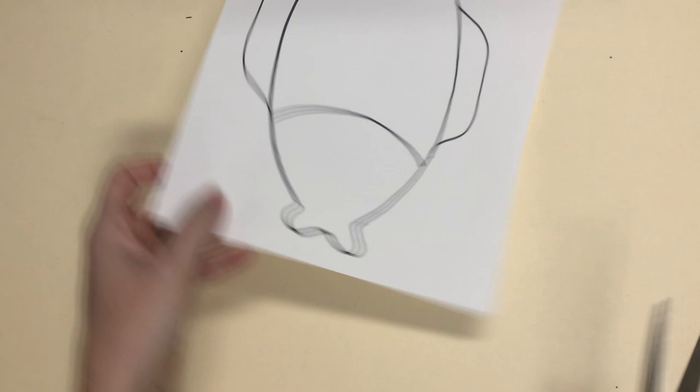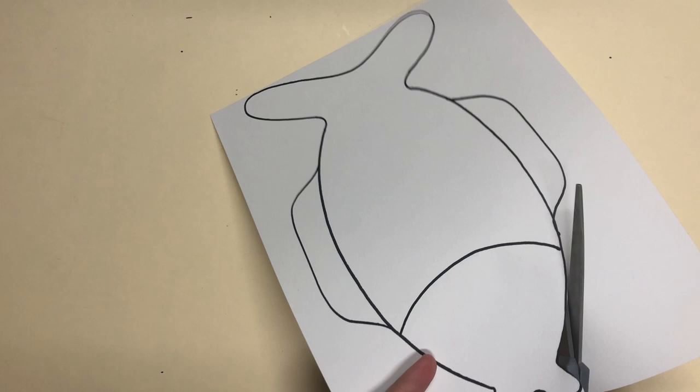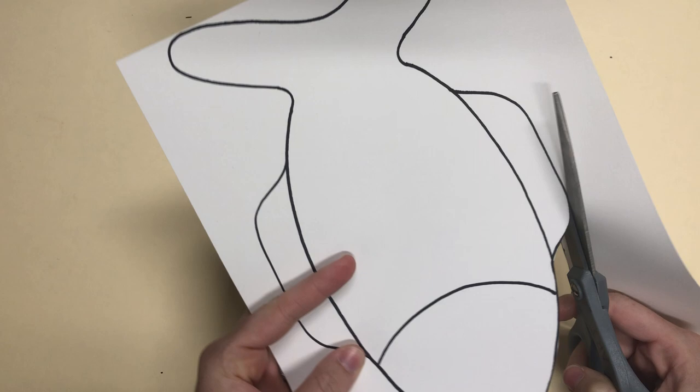Now why in the world would I need to use this as a tracer? Why couldn't I just draw another fish? The reason why is because we're going to be making a double-sided work of art.